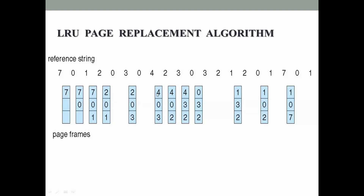Next page reference is 2. Two is not in memory - we have 4, 0, and 3. Checking past references: 4, 0, 3 - three has not been used for the longest period of time, so 3 is replaced with 2. Next page reference is 3. Three is not in memory, so we replace either 4, 0, or 2. Checking past references: 2, 4, 0 - zero will be replaced with 3.